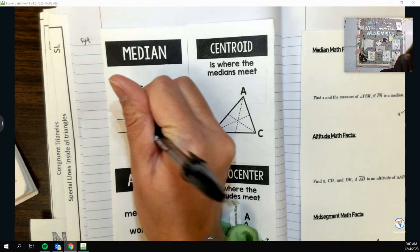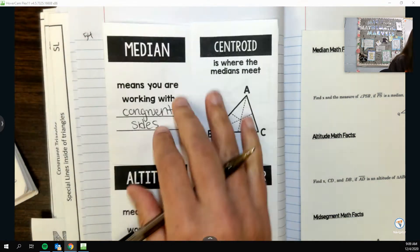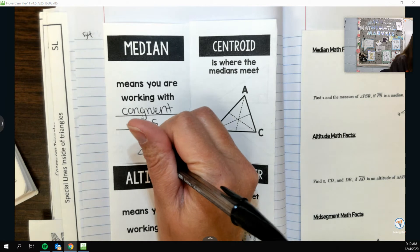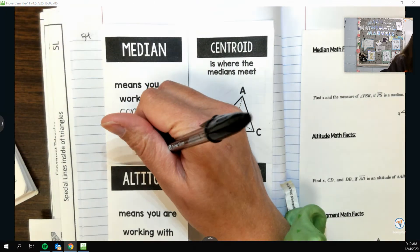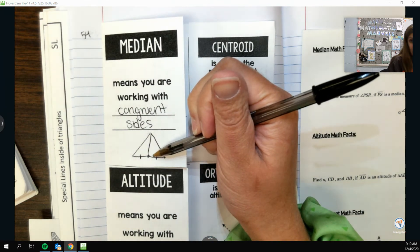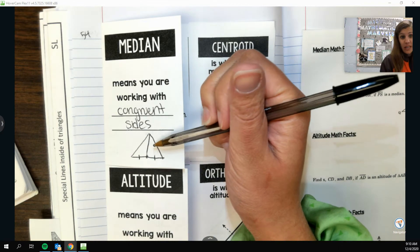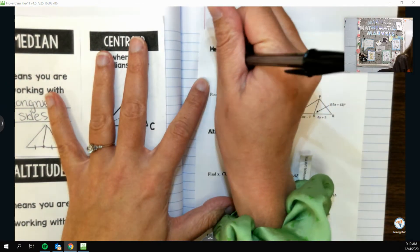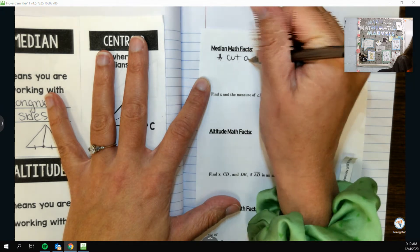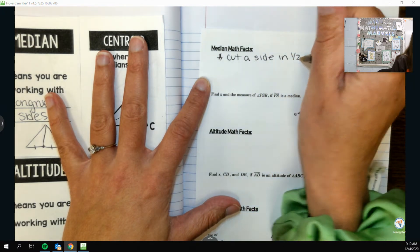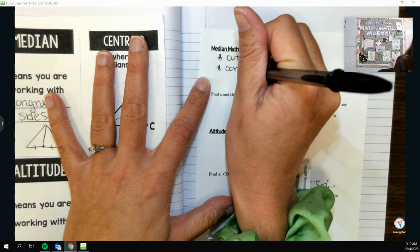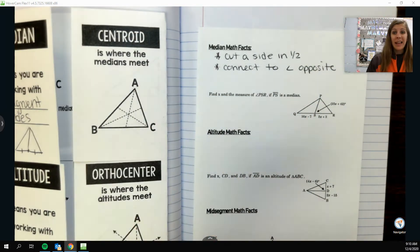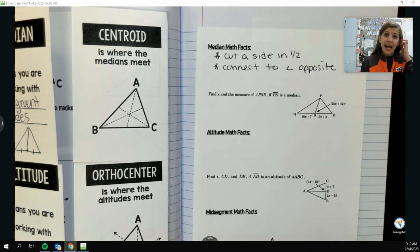Because again, with a median, all I'm doing is I have a triangle, I'm picking a side, I'm cutting it in half with a point, kind of like a midpoint, and then I'm connecting it to the angle across. So it might not go up perpendicularly, and it might not cut this angle in half over here. Chances are actually that it won't. So our median math facts, it's kind of less than the other things, so it's definitely going to cut a side in half and it will then connect to the angle opposite, but not in any sort of meaningful way.